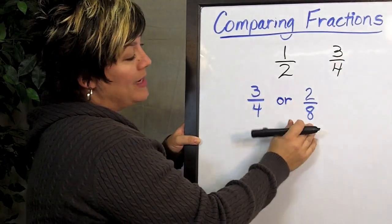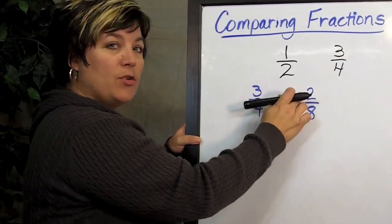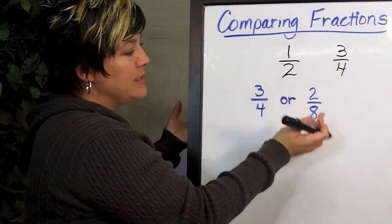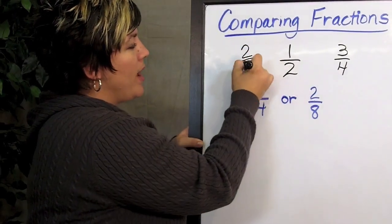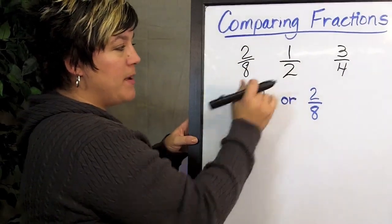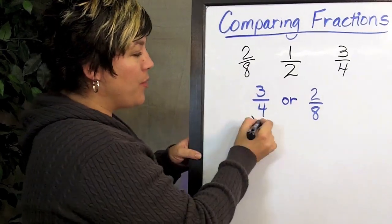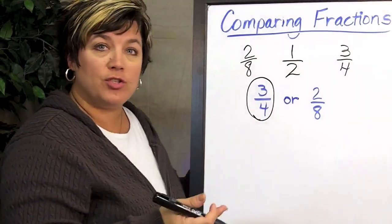We'll look at the 2 eighths. Half of 8 is 4, is 2 greater or less than the 4? Well, it's less than. So right away we can tell just by using this benchmark of half that 3 fourths is greater than 2 eighths.